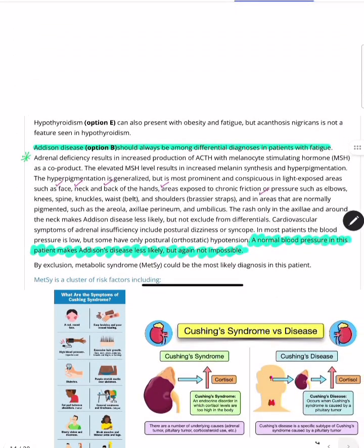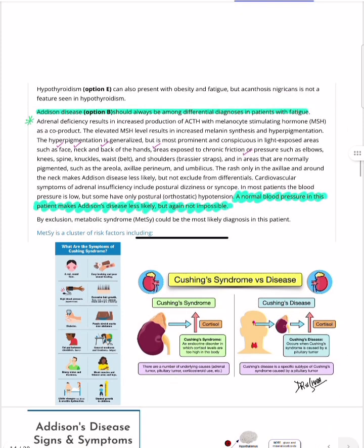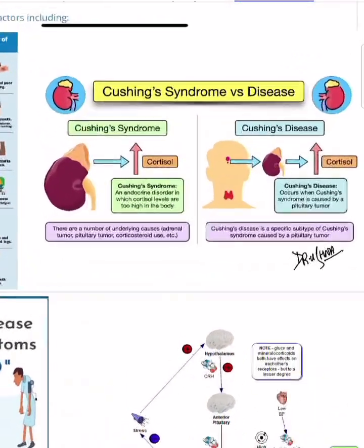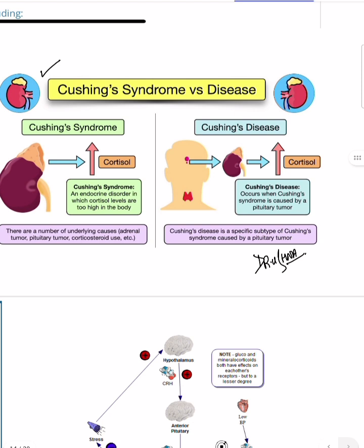Hypothyroidism does not present with acanthosis nigricans — that rules it out. An important concept: what is the difference between Cushing syndrome and Cushing disease? Cushing syndrome is the endocrine disorder where cortisol levels are too high, with multiple underlying causes — adrenal, pituitary, or corticosteroid use. Cushing disease specifically refers to the pituitary being the culprit — pituitary involvement makes it 'disease.'